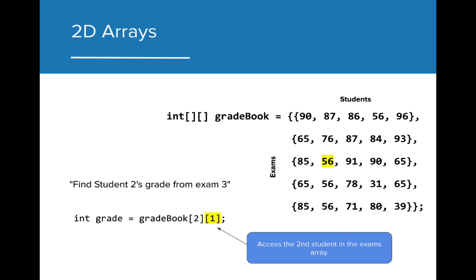Since the value at index 2 is an array, we then need to use a second set of brackets to access the index in that particular array that we would like to find. In this case, we want to access index 1 of the array to get the second student's grade for the exam, as the first student would be found at index 0.